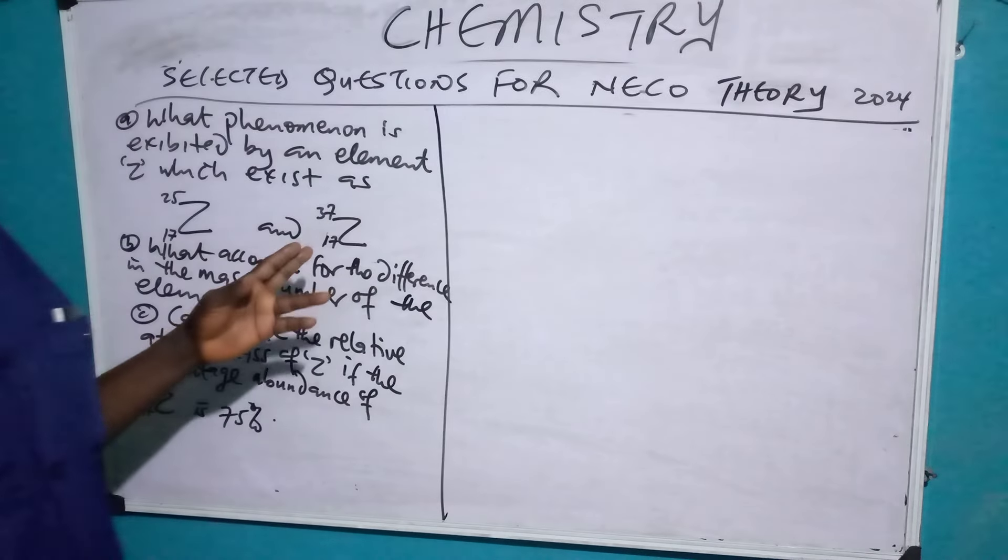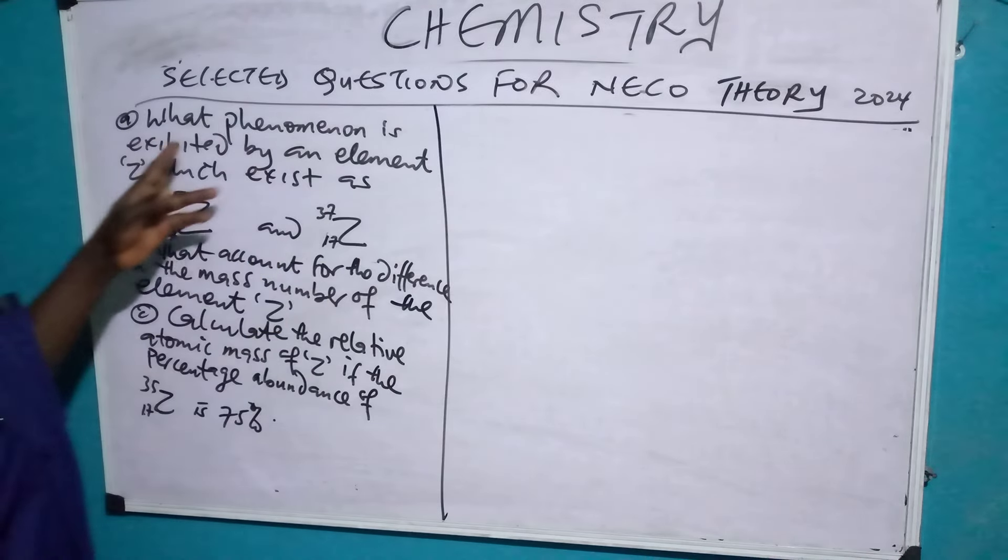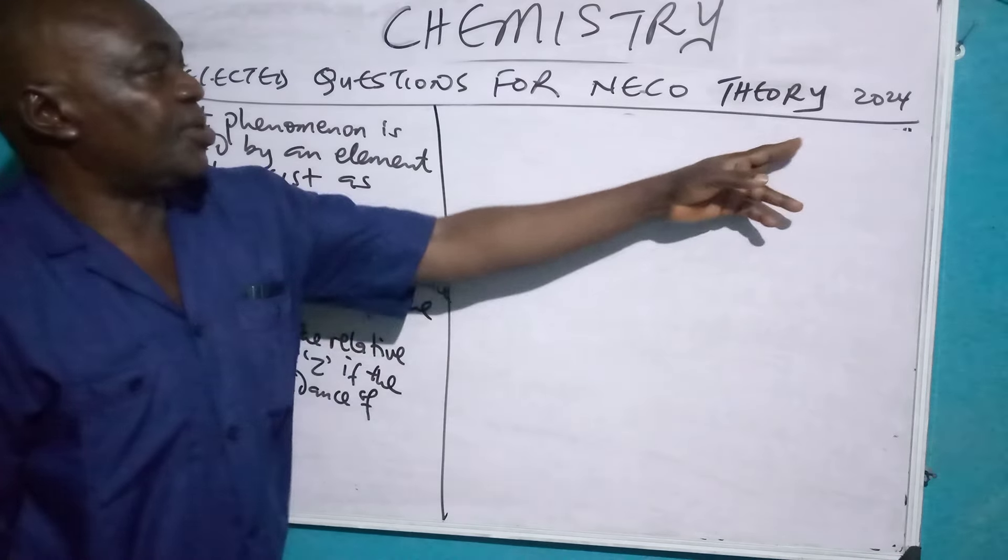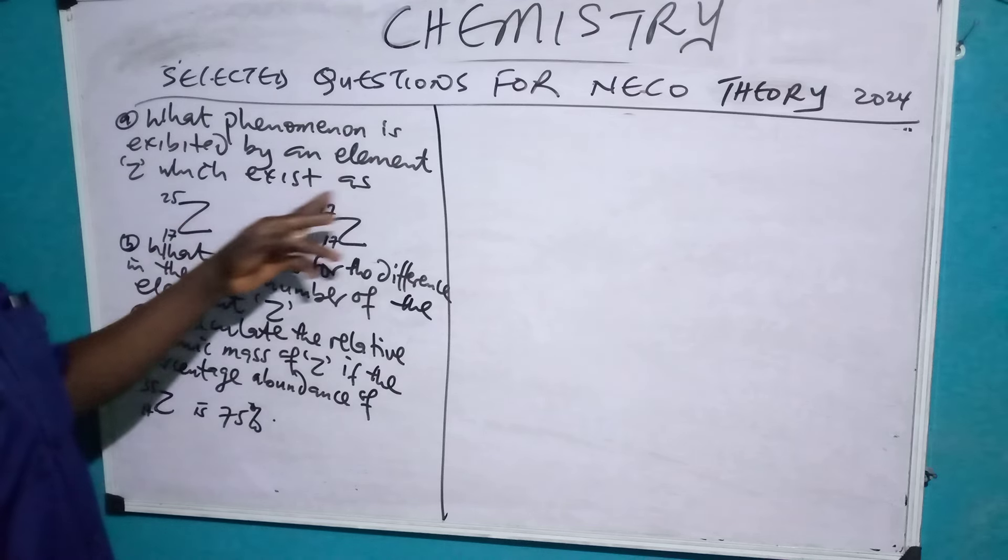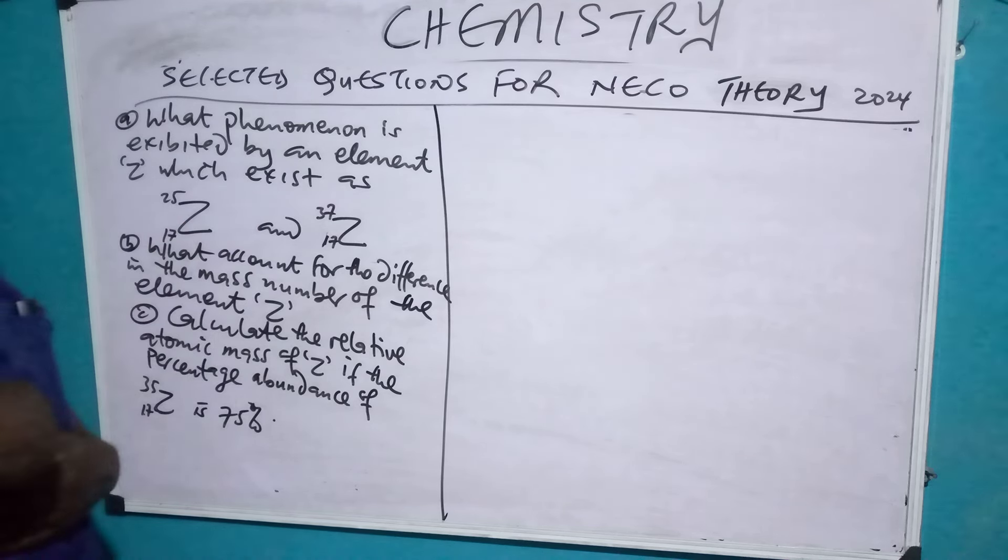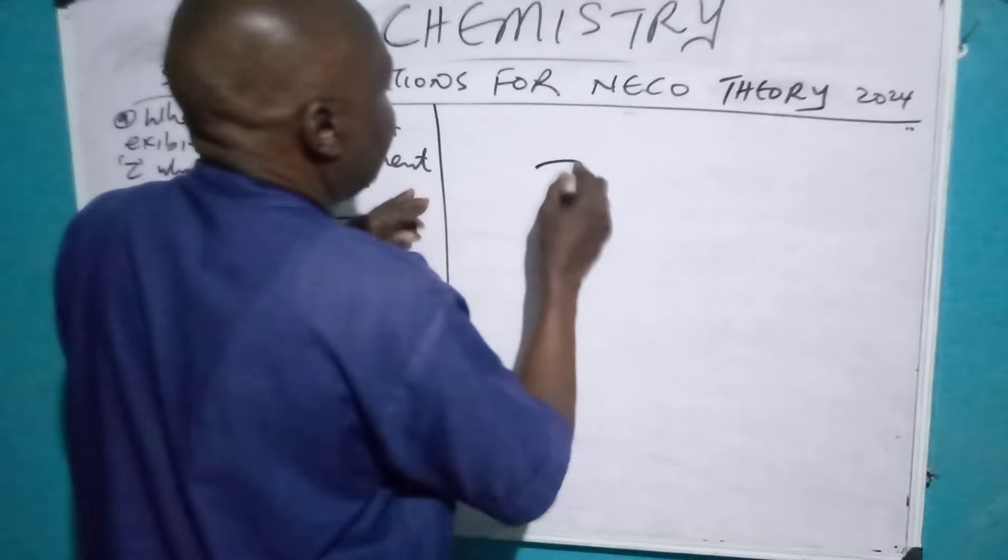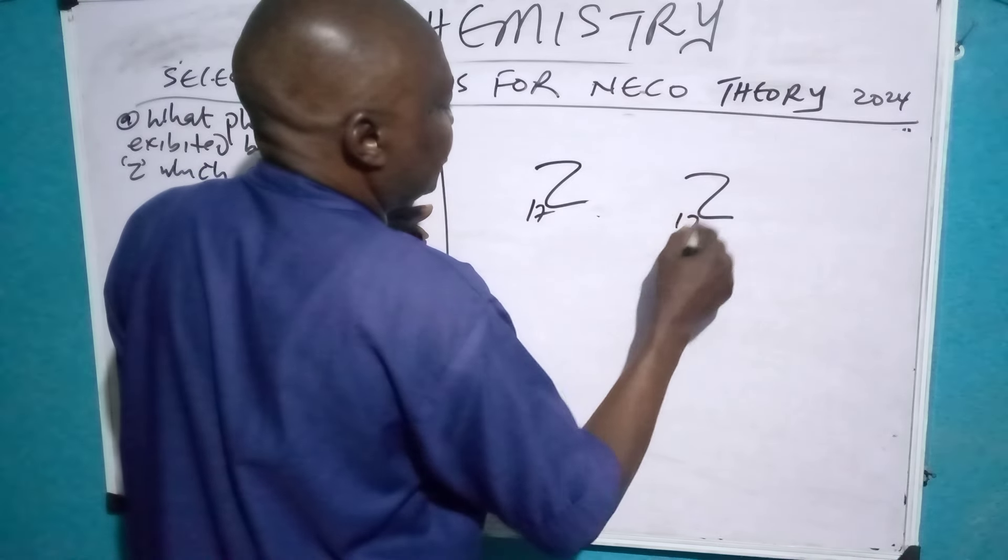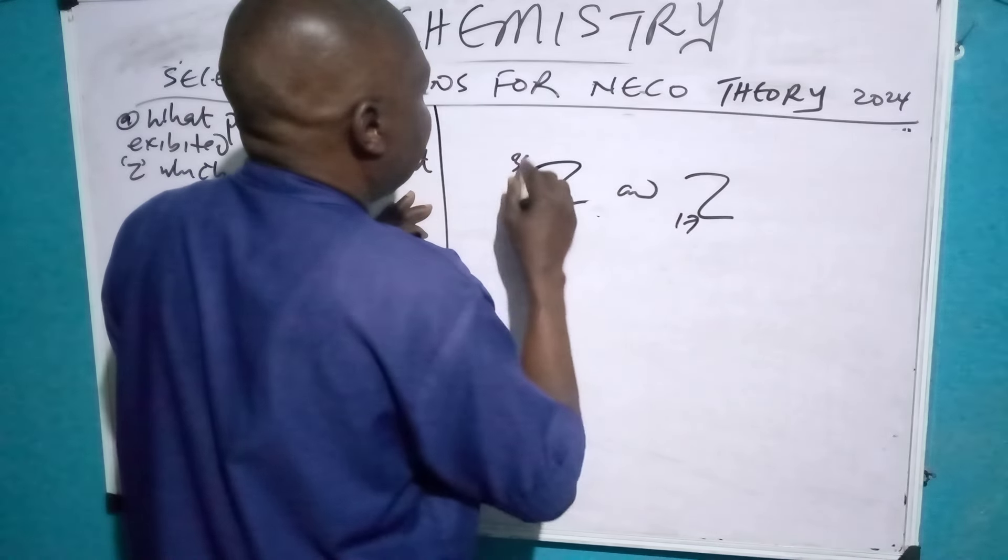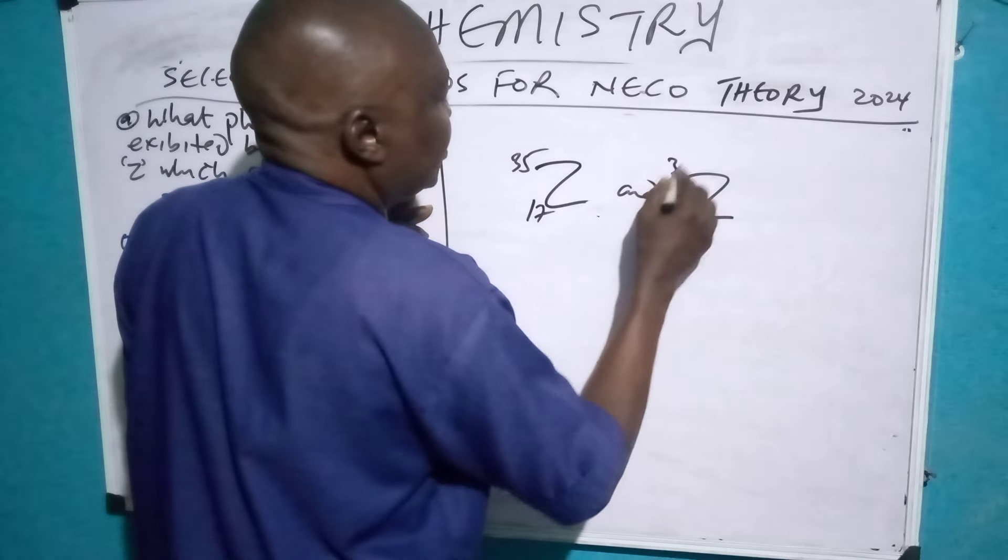Now, this is a question before us. It's a theoretical theory question. Selected question for NECO Theory 2024. What phenomenon is exhibited by an element Z which exists as, you can see the element, this is the form of Z₁₇³⁵, another Z₁₇³⁷.